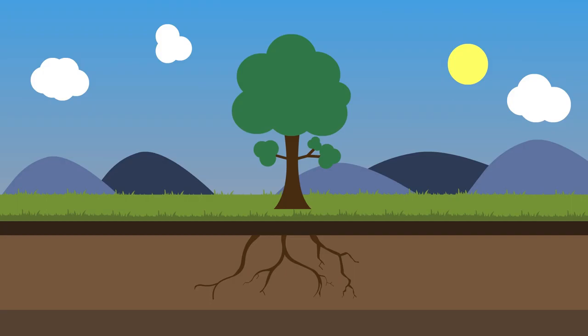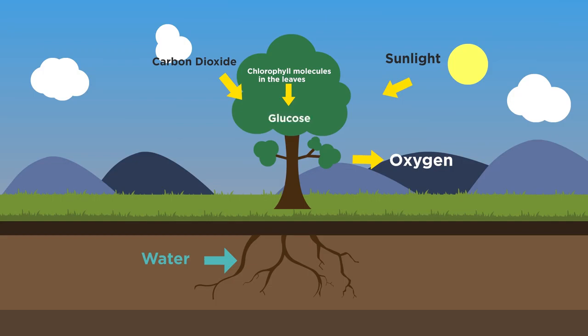The general gist of what happens in photosynthesis is that green plants and algae trap light from the sun to fix carbon dioxide with hydrogen and water. This makes organic compounds which then provide food for not only the plant itself but also all animals.